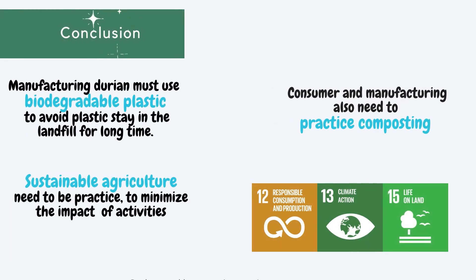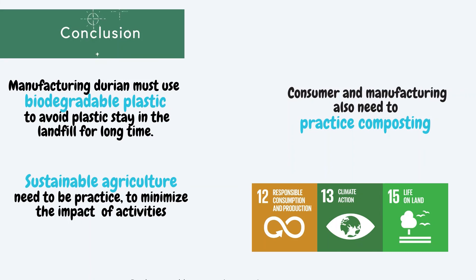We have reached our conclusion. Manufacturing and packaging durian must use biodegradable plastic to avoid further problems to the environment. Plastic waste will take a long time to degrade, and when it degrades to microplastic, it can move into our food chain and affect our health. Apart from that, consumers and manufacturers also need to practice composting or try to convert waste to energy. And finally, sustainable agriculture needs to be practiced to minimize the impact of agricultural activities. All of this will contribute to the Sustainable Development Goals — which are responsible consumption and production, climate action, and life on land.